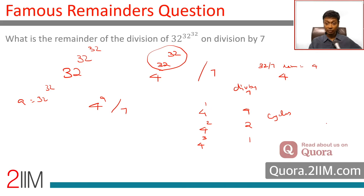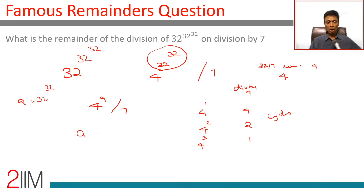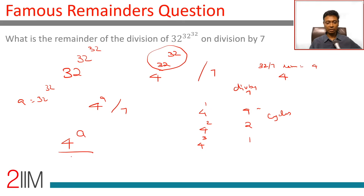So now, if 'a' were to leave a remainder of 1 on division by 3, then the remainder would be 4. I'm making a big leap here, so I'm going to go over this again. We've said 4 power a divided by 7 — the possible remainders are 4, 2, and 1, and this depends on different values of a.